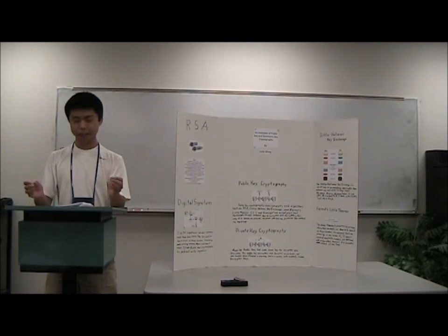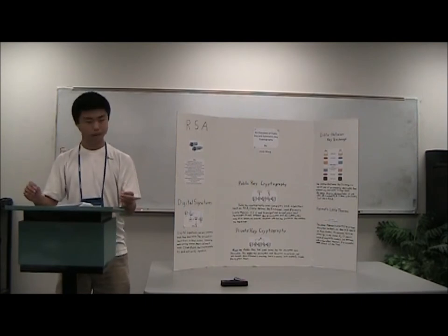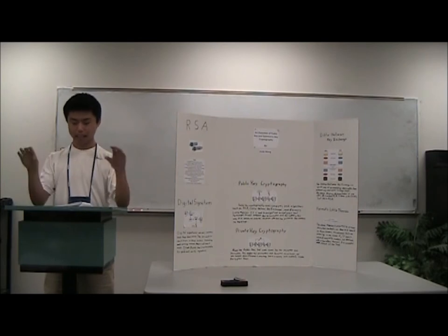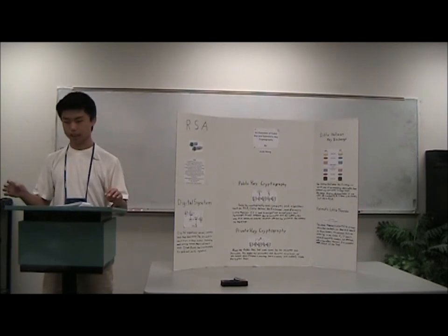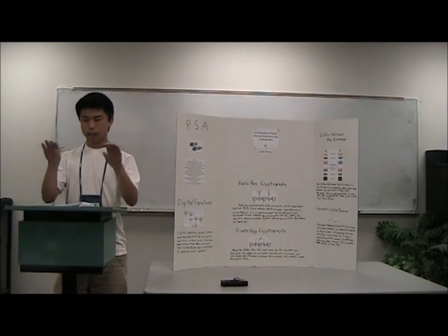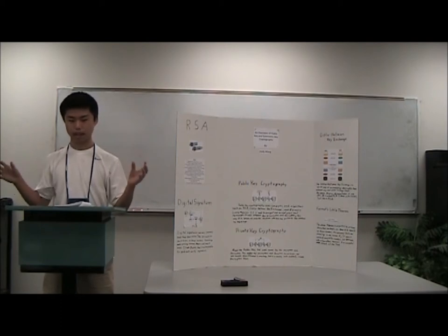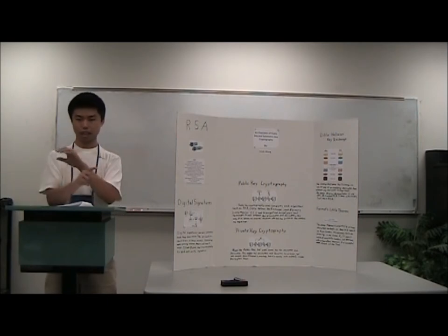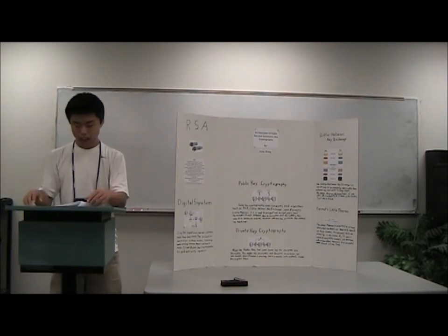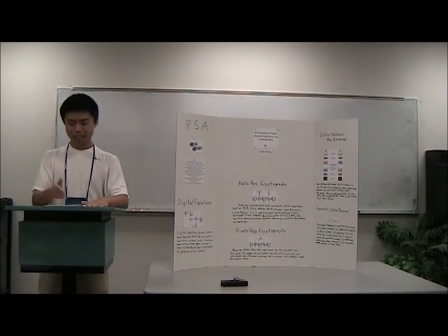So we start with two people, Bob and Alice. They first agree on a mutual number, or in this case on my diagram, I use a color just for easier understanding. So they first agree on a color, let's say like yellow or something. And then they each count their secret key, which is like for Bob it's blue and for Alice it's red. And so the only thing the interceptor knows so far is the yellow which they mutually agreed on. And then they mix the agreed color with their own secret color to create a public color that they send to each other. So then the interceptor knows both their public color, which is a mixture of the original agreed color and their secret keys. The interceptor knows both of them and the agreed color. But that's the only thing he knows about this whole process.